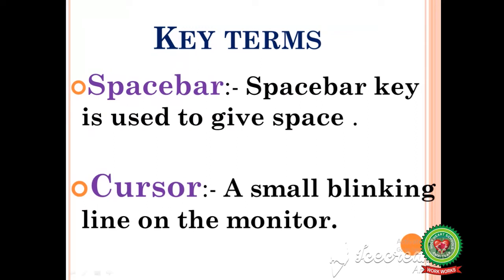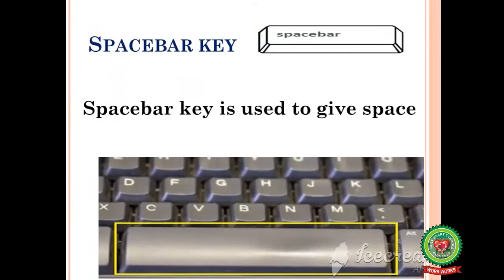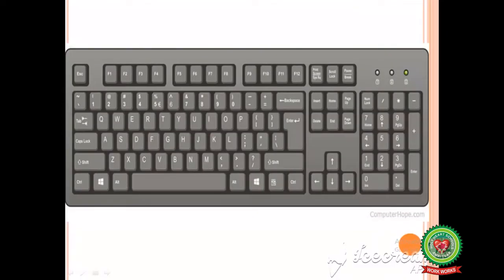Let's start with spacebar key. Spacebar key is used to give space. Look at this picture — spacebar key is the longest key on the keyboard. It is used to give space between two numbers or words. Look at this keyboard: how many spacebar keys are there? There is only one spacebar key.